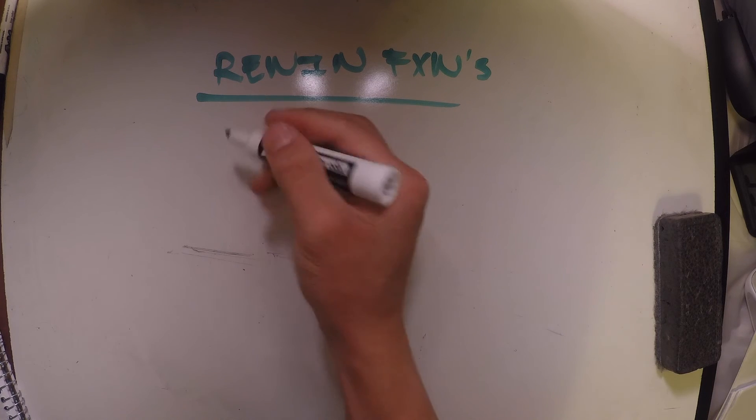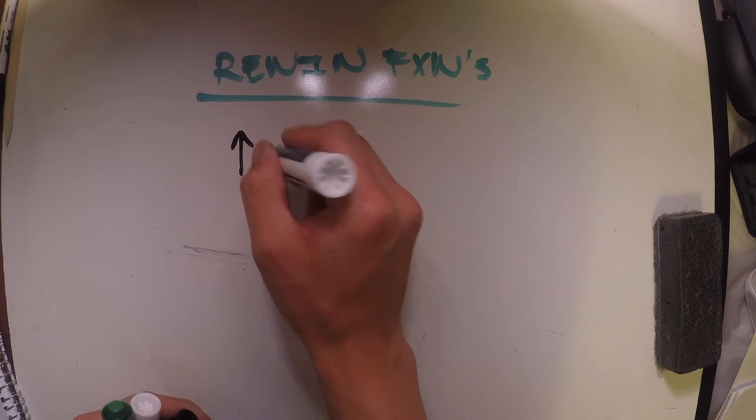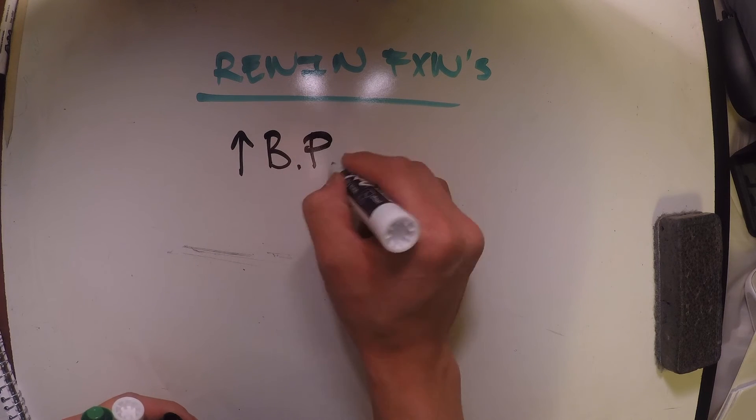Okay, so we know that we're going to release renin in response to low blood pressure to prevent our capillaries from collapsing. So as you can assume, when we activate that angiotensin 2, we're going to contract our smooth muscle surrounding our afferent arterials. In doing so, that's going to result in increased blood pressure.